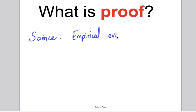Empirical evidence means evidence that you took from doing experiments. That is not a proof. You cannot be 100% sure that one time the ball will not fly off into the sky. You have not proved why the ball comes to the ground or that it may not fly up in the air. You've just shown that in all your experiments, the ball actually did fall on the floor.